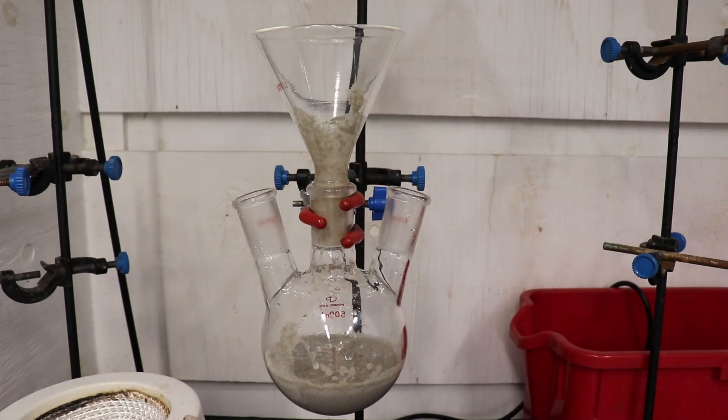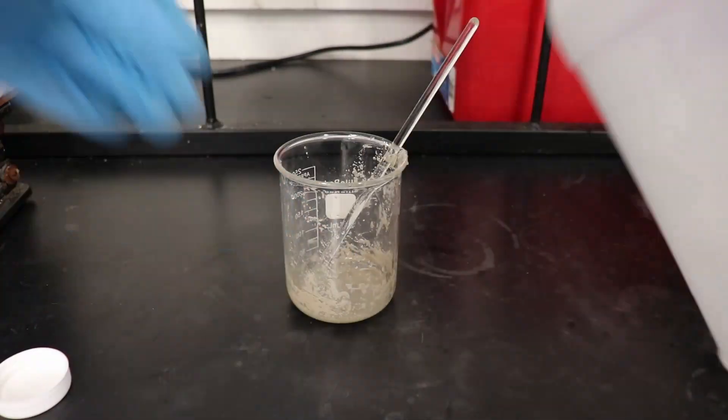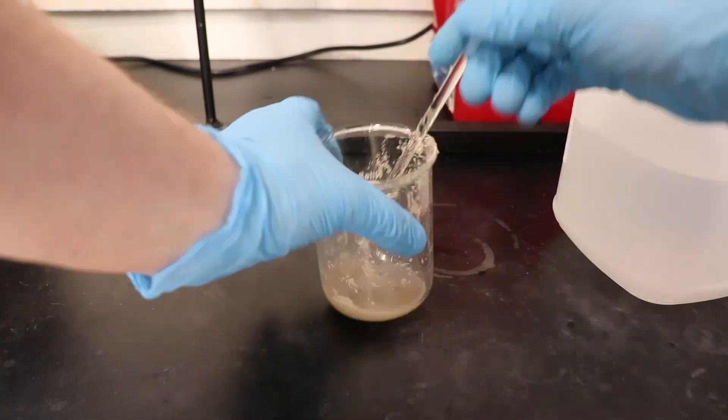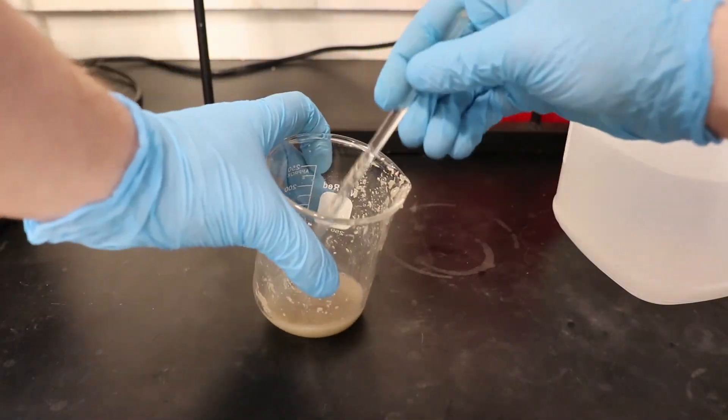The first step is to remove the nitrobenzene via steam distillation. A lot of the reaction mixture was stuck to the walls of the beaker, so I used some ethanol to dissolve it and add it to the flask.